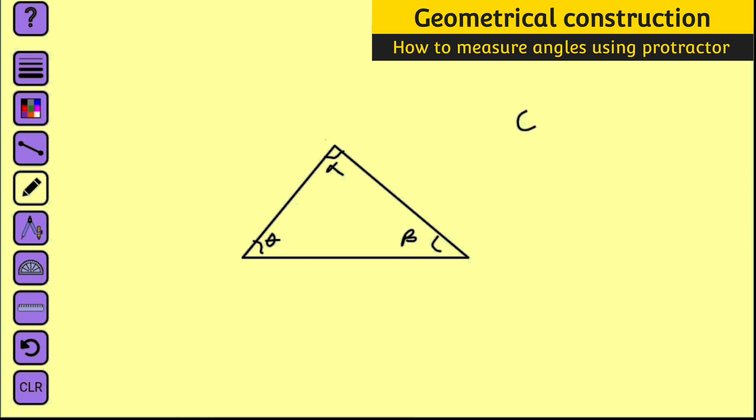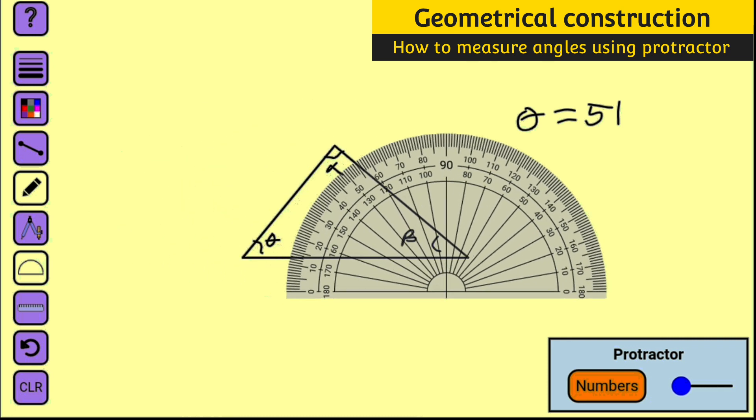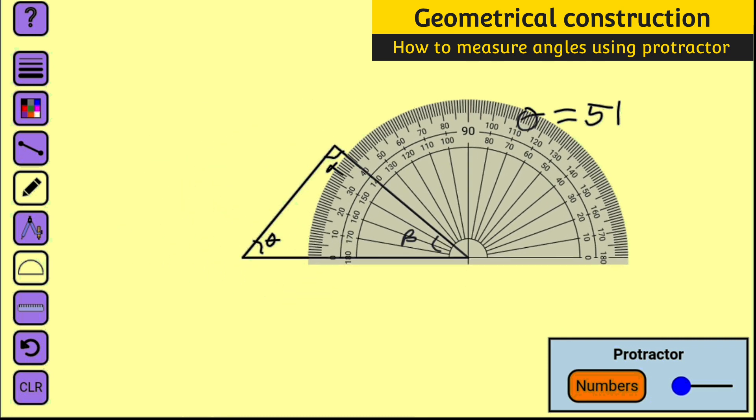So we have theta equal to 51 degrees. Let us measure angle beta. Beta will be 10, 20, 30, approximately 40, so it is 40 degrees.